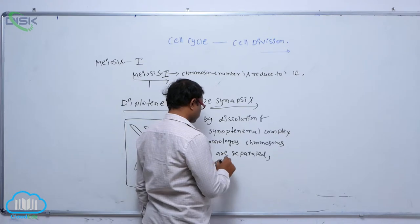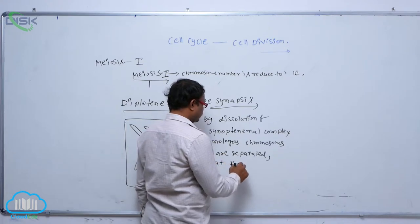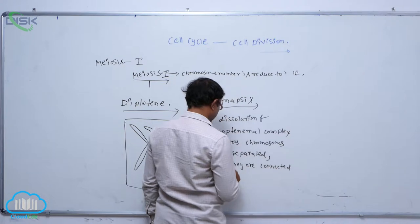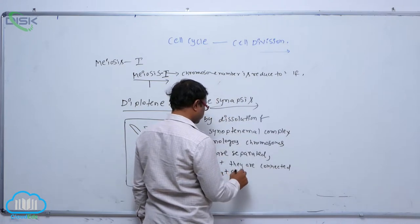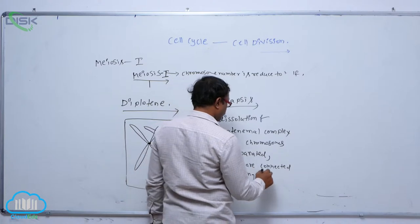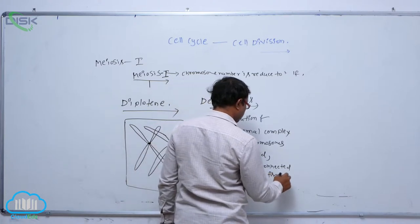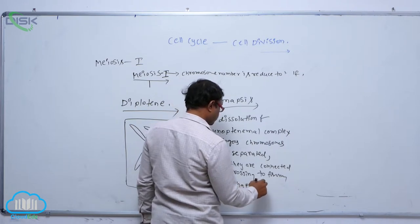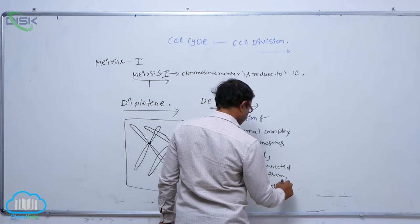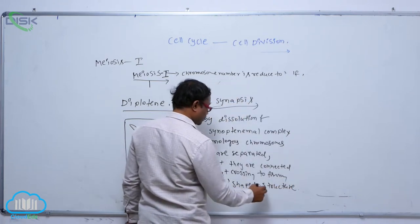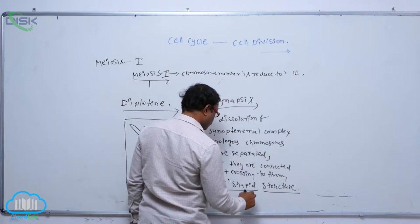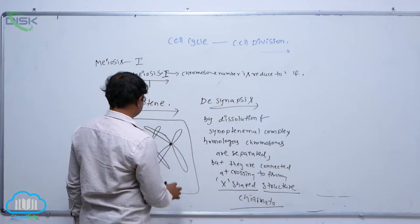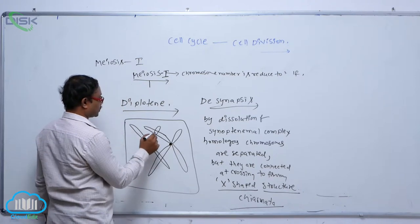They are connected at crossing over to form X-shaped structures. These X-shaped structures are known as the chiasmata.